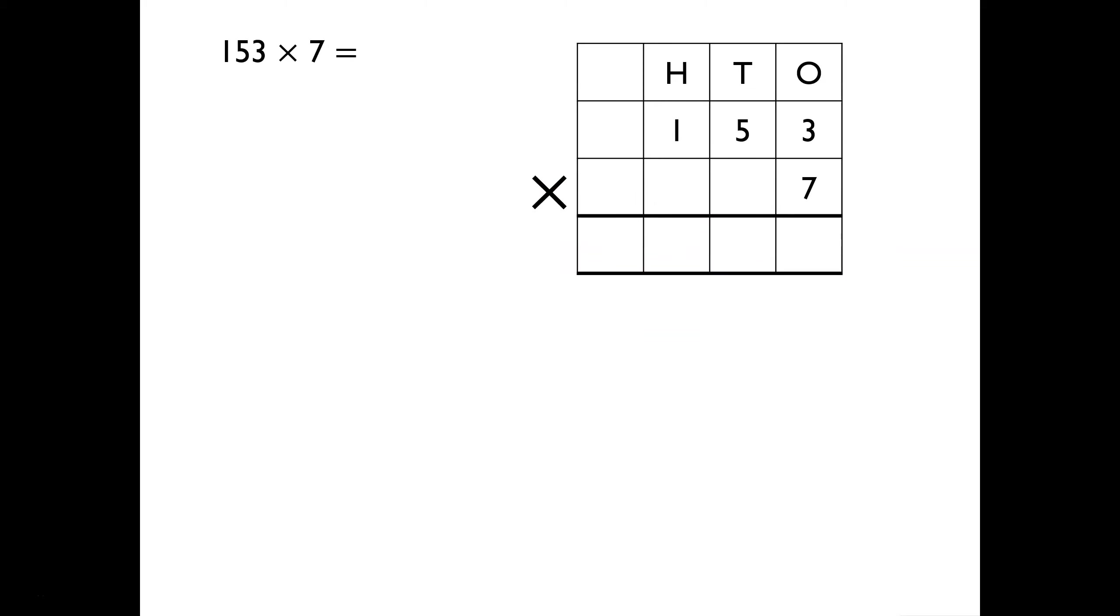Here's another example of short multiplication. This time, we won't use the place value grid to guide us. We will multiply each part of 153 by 7 in turn, starting with, yep, the smallest value, the ones. Let's start with 3 times 7, which is equal to 21.